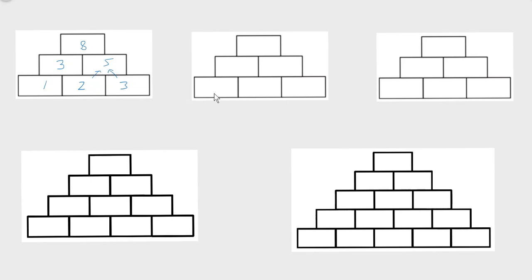But we can change the order of the numbers on the bottom. We could swap the 2 and 1 and do 2, 1, 3. What would happen? Would we still get 8? 2 and 1 makes 3, 3 and 1 makes 4, 3 and 4 makes 7. So no, we get a different answer on top. What if we put the 3 in the middle with 1 and 2 on the sides? What total would we get?